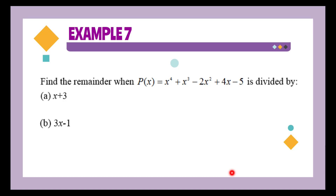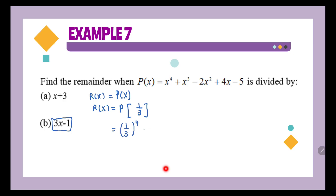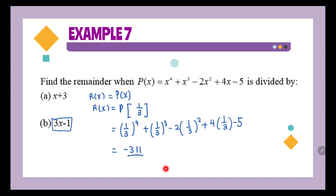Now let's look at example 7b: find the remainder when the same polynomial is divided by 3x minus 1. We use the same concept — the remainder equals the polynomial evaluated at x = 1/3. Substituting 1/3: (1/3)⁴ + (1/3)³ − 2(1/3)² + 4(1/3) − 5. After calculating, the remainder is −311/81. So to find the remainder, we simply substitute the value of x from the divisor into the polynomial.